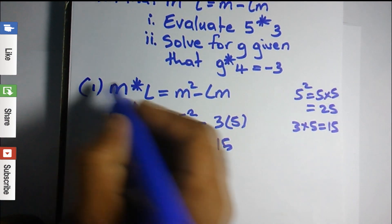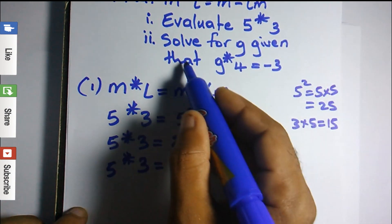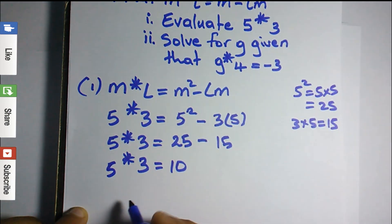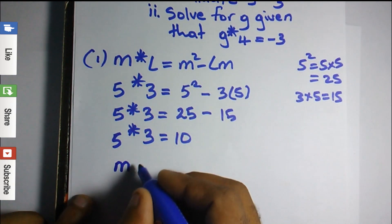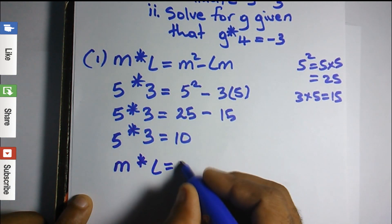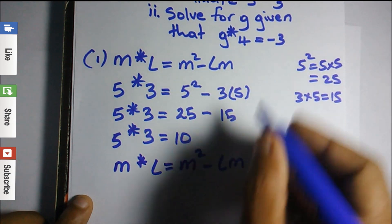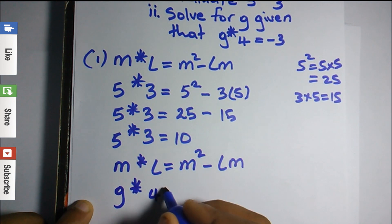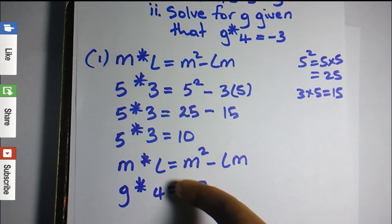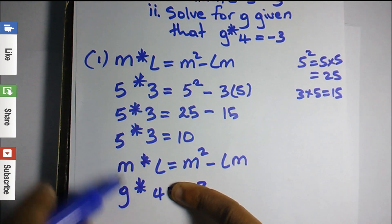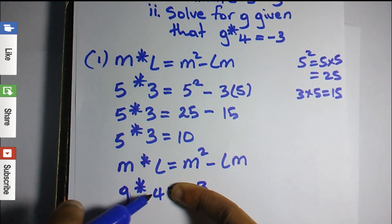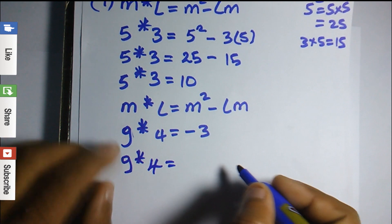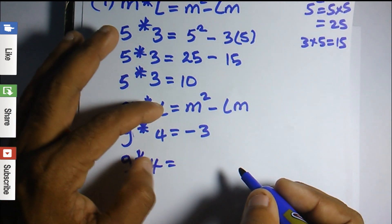That was the first section of the question. The second part says: solve for g given that g★4 is equal to negative three. We're going to use the same system — m★l equals m squared minus lm. So the question is g★4 equals negative three. For now, forget about the negative three; we're just going to evaluate this section by substituting g for m and four for l.